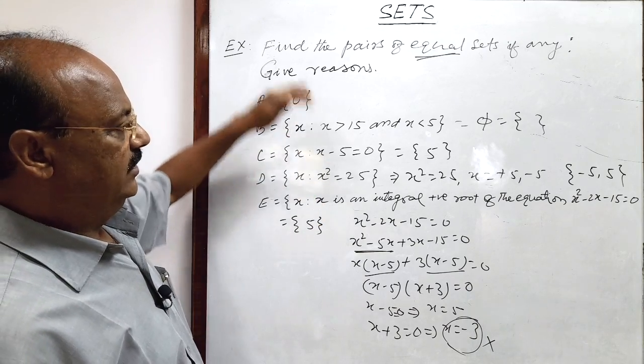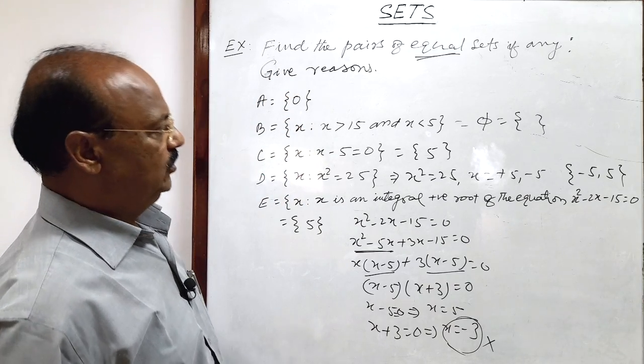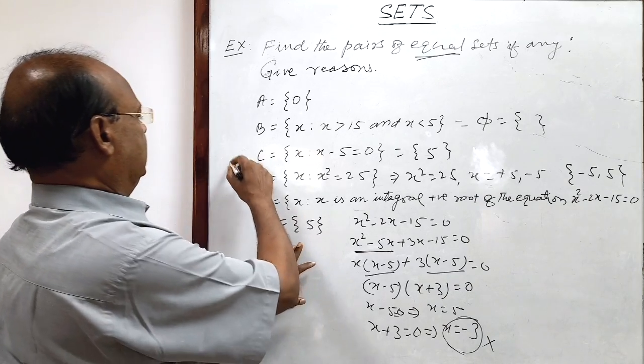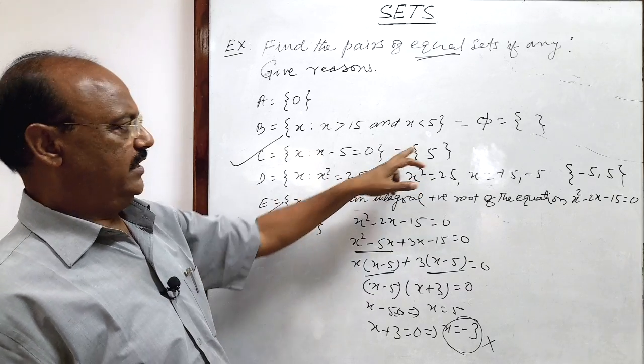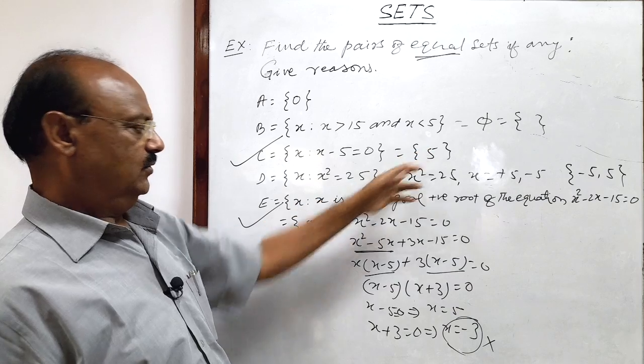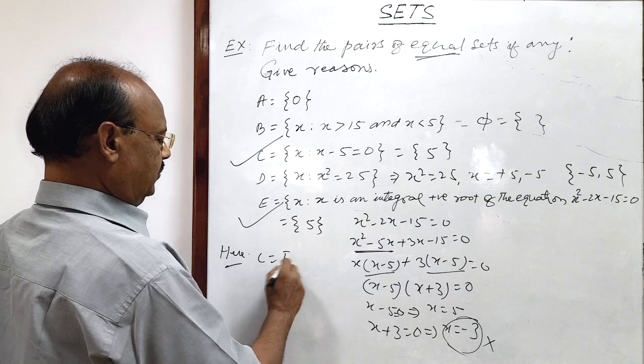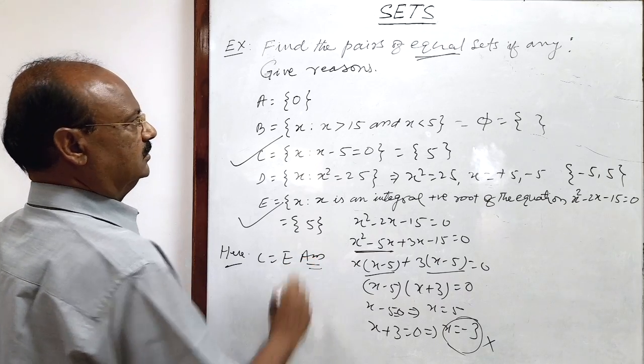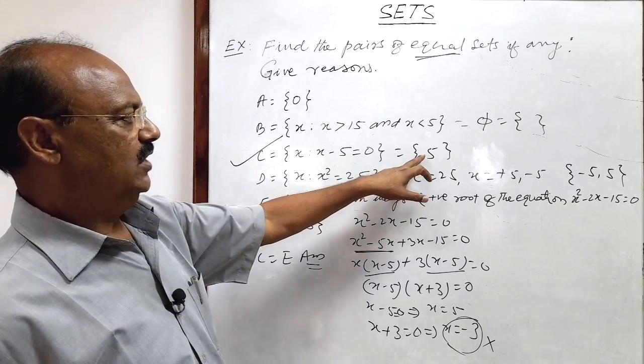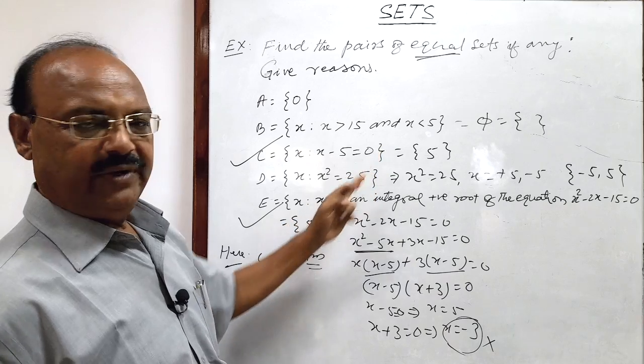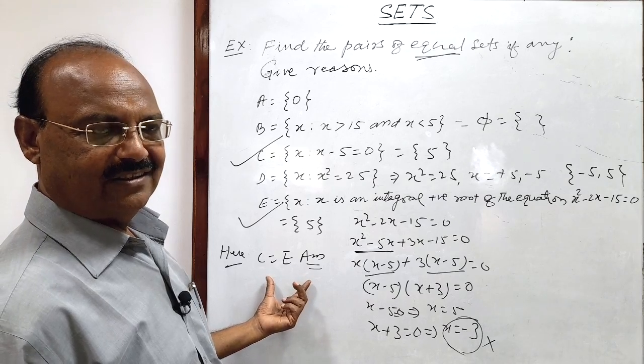Now we can decide which two sets are pairs of equal sets. So you see here these two sets C and E, both the sets are equal, both the sets are having same element 5. So here we find C is equal to E, this is the answer pair of equal sets C and E. Why equal? Both the sets are having same number of elements 1 as well as same members 5. So these two sets are equal, this is the answer understood.